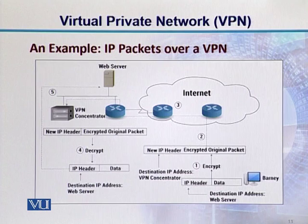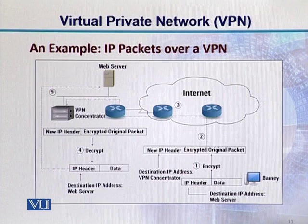Once it is encrypted, in the second step, a new IP header is added along with the encrypted original packet. So the original packet was encrypted, and a new IP header is added to it. This new IP header contains the VPN concentrator's IP address as the destination IP address. So this means that in the second step, the new IP header and encrypted original packet are handed over to the internet — the public network.